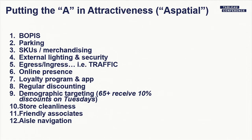Some of these attractiveness features are geospatial and some are not. There's BOPUS — buy online, pick up in store. It's huge. It is the crossover between battling the loss of your brick-and-mortar establishment with your online presence. 78% of people used BOPUS last year's Black Friday season. Parking, merchandise variety, storekeeping units — I'm going to this place because they store more snow shovels than they do down the street. External lighting, security, ingress and egress, traffic — how many vehicles pass by between 5 and 7 p.m. on a Wednesday.